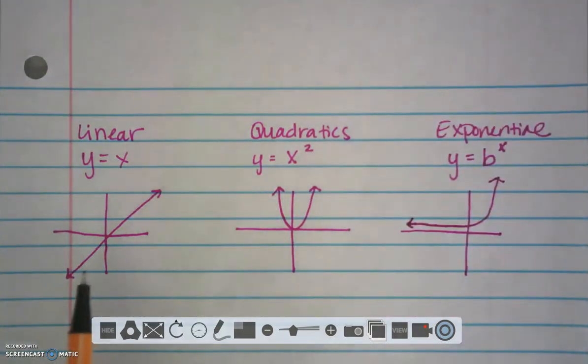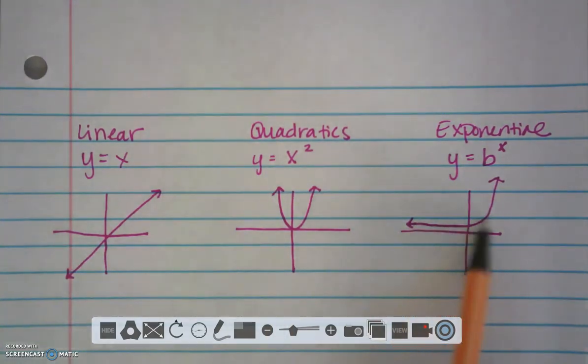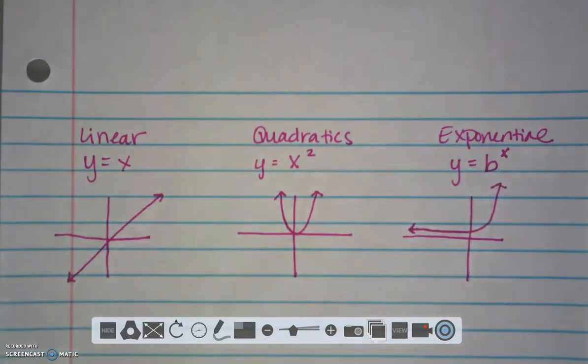Exponentials are a line that get very close and they curve. So we've talked about straight lines. We've talked about parabolas that have a u-shaped curve. And now we're talking about exponentials that have a slight curve in their line. So let's start our discussion with transformations.